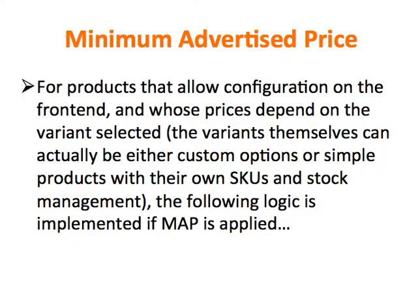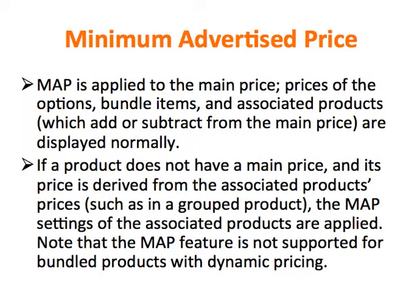For products that allow configuration on the front end and whose prices depend on the variant selected, the variants themselves can be either custom options or simple products with their own SKUs and stock management. The following logic is implemented if MAP is applied: MAP is applied to the main price. Prices of the options, bundle items, and associated products which add or subtract from the main price are displayed normally. If a product does not have a main price and its price is derived from the associated products' prices, such as a group product, the MAP settings of the associated products are applied. Note: the MAP feature is not supported for bundled products with dynamic pricing.